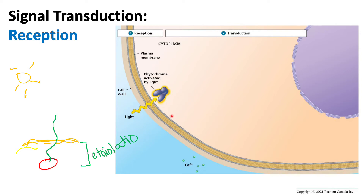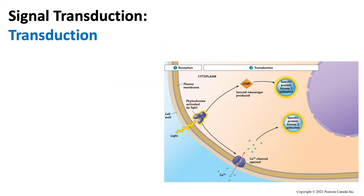After we receive the light, whenever we have a receptor and it is activated, it can cause the activation of secondary messengers. Once the light activates the phytochrome, the phytochrome will activate a secondary messenger known as cGMP. The second thing that will happen is that the calcium channels will be opened due to the activation of the phytochrome. When the calcium channel opens, the calcium concentration within the cell will start to increase, and once the Ca²⁺ concentration begins to increase, it activates a specific protein kinase inside the cell.